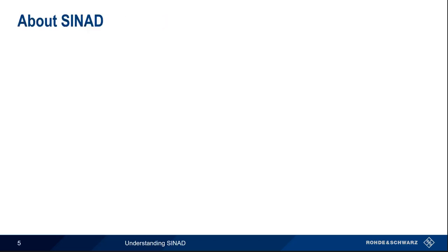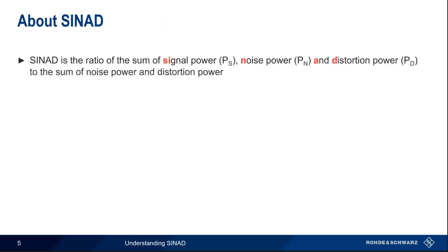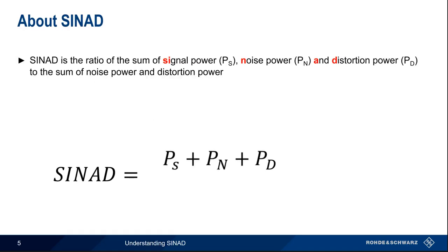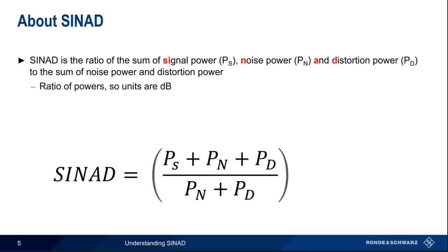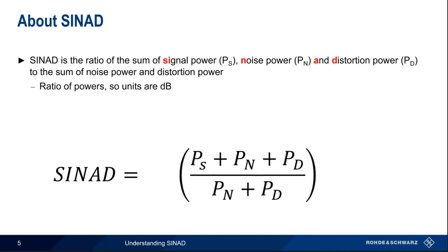SYNAD gets its name from the three components that it measures. It's the ratio of the sum of signal power, noise power, and distortion power to the sum of noise power and distortion power. Because it's a ratio of powers, SYNAD is expressed in units of dB.